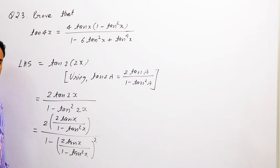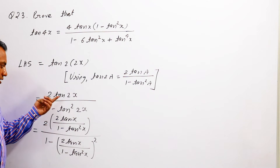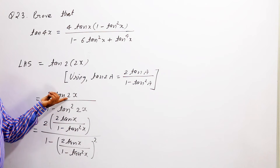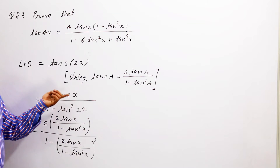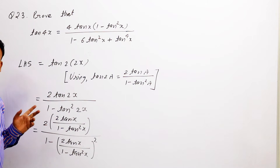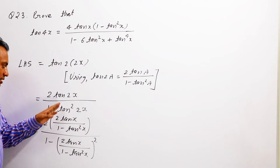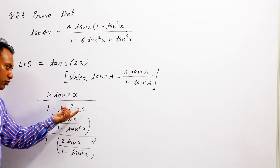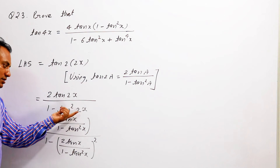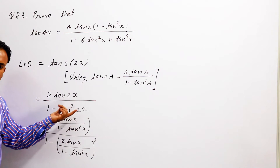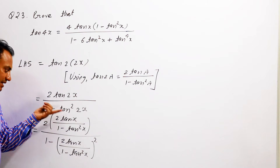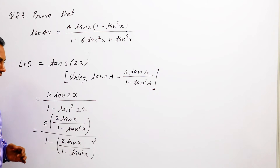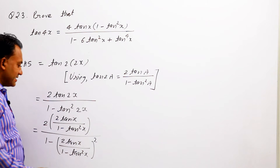हमने दुबारा tan 2a का formula use किया, इस बार a = x। यहां भी हमने use किया और यहां tan 2x की whole power है, इसलिए हमने tan 2a का formula use किया लेकिन उसकी whole power 2 भी लगा ली।